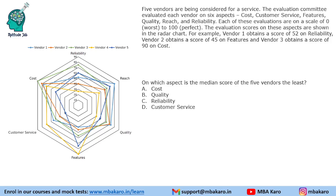Hello everyone, welcome to Aptitude Jab. This set from CAT 2019 Slot 1 is based on a radar chart — some people call it a spider chart as well. It was a simple set requiring observation-based answers rather than calculation. If one tries to read all values and do calculations, that would take too long; instead, one should just observe the values and answer the questions.